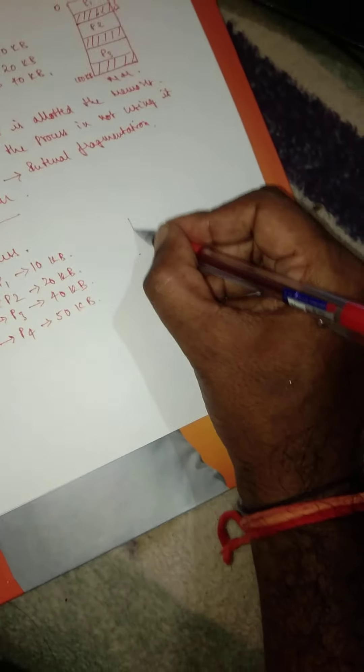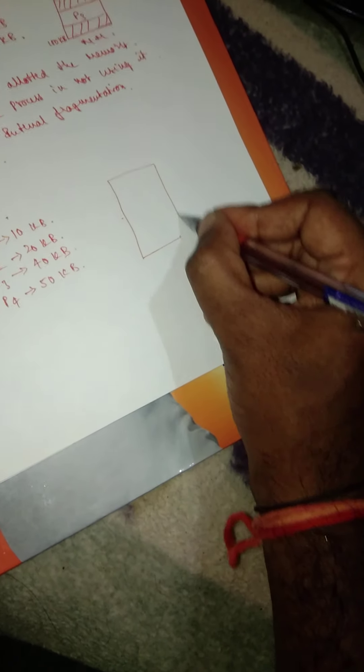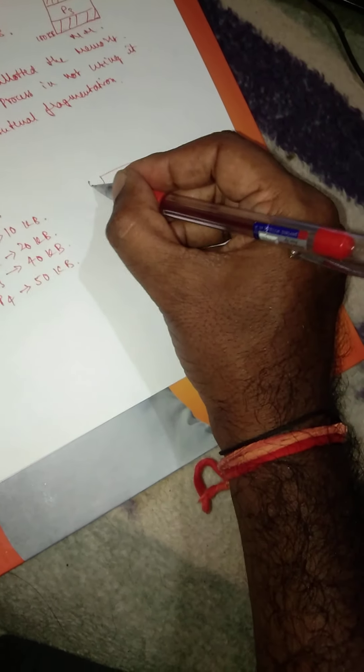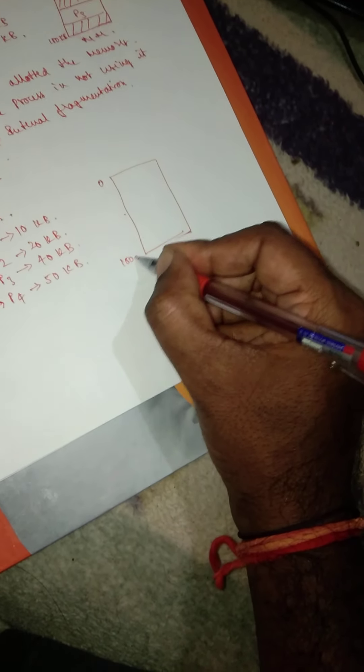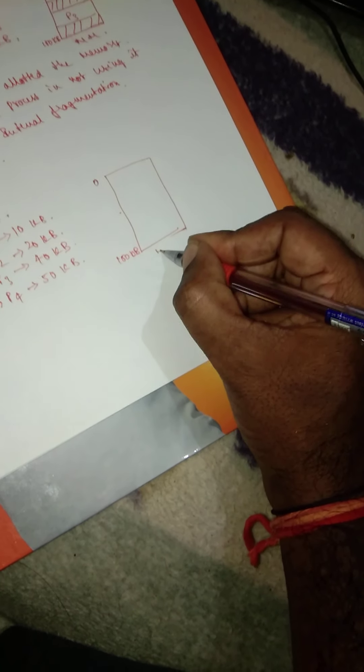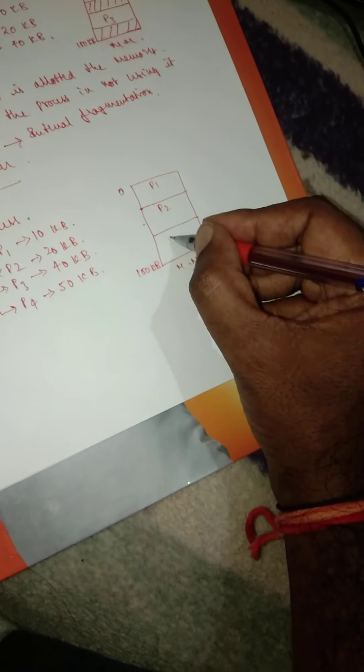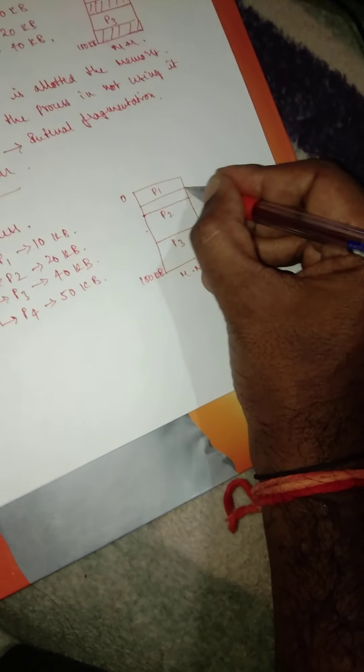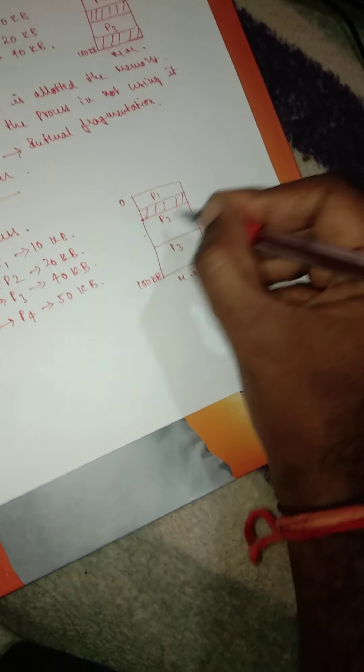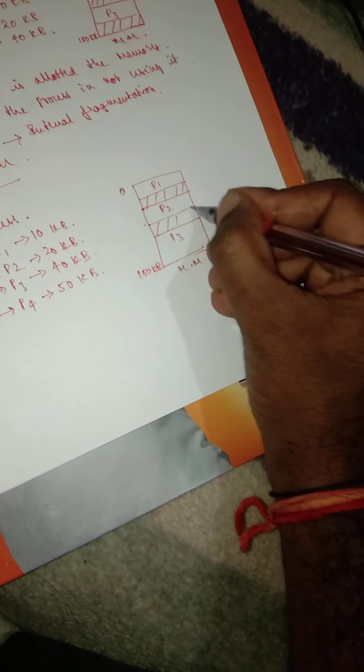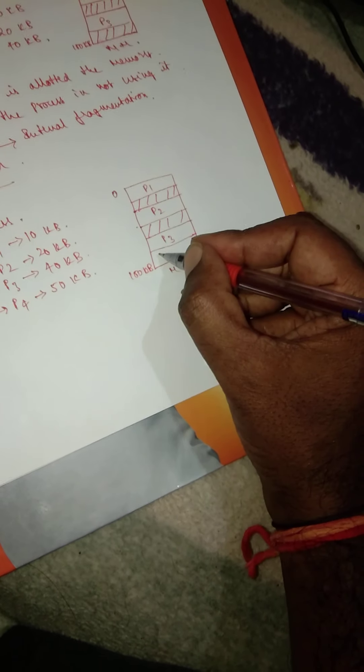Again we will have the same memory representation. It starts with 0 to 100kb. Let me assume that this is the main memory with three partitions. P1 is used here, P2 is used here, and P3 is used here. This much space is free, this much space is free, and this much space is free.